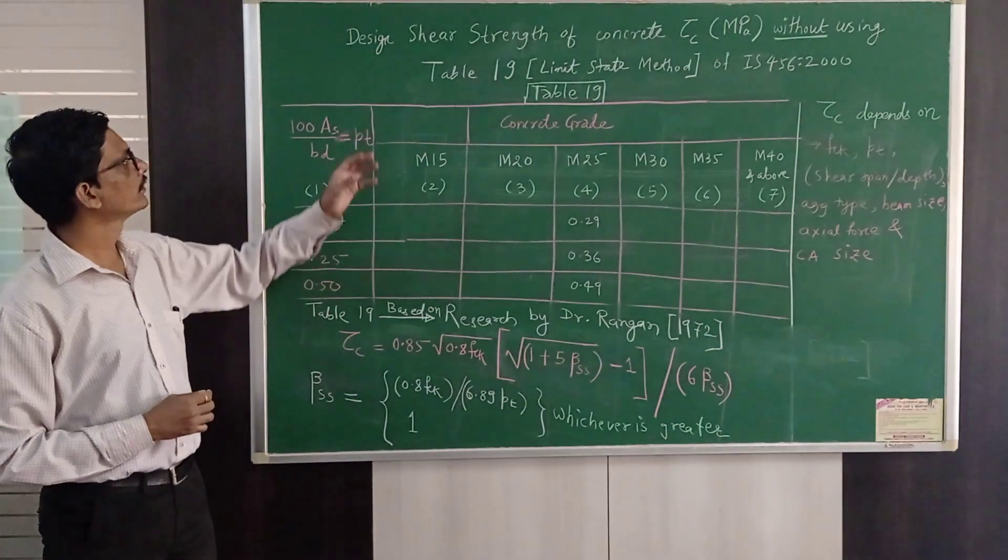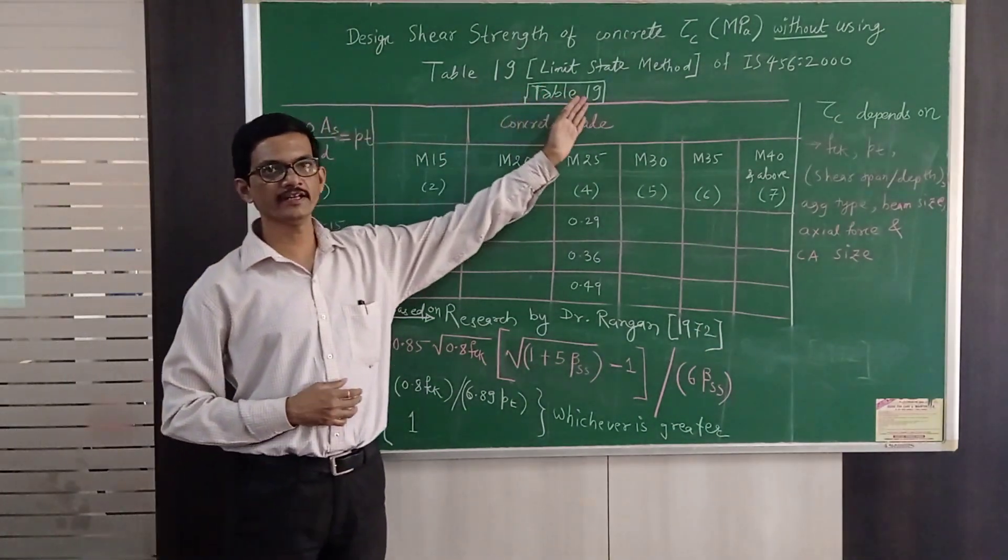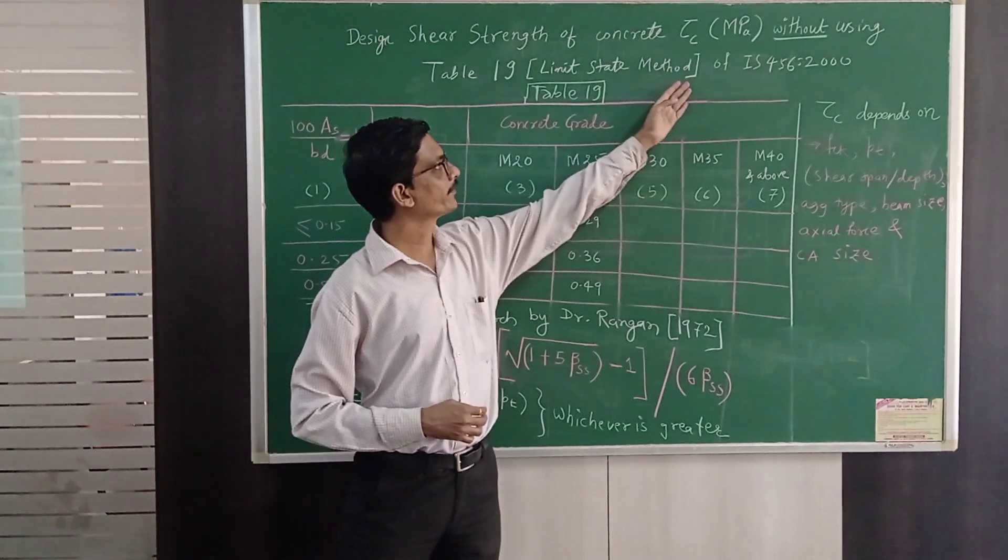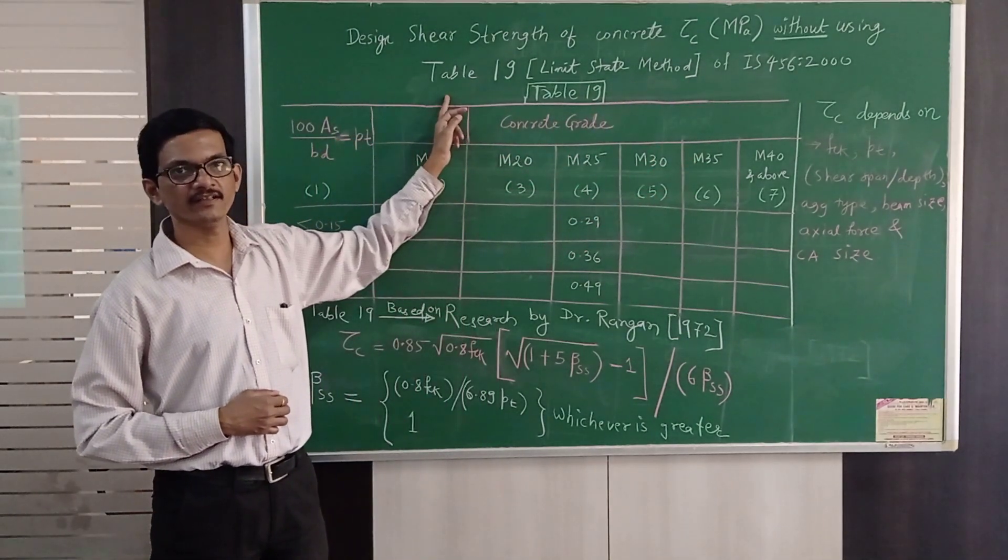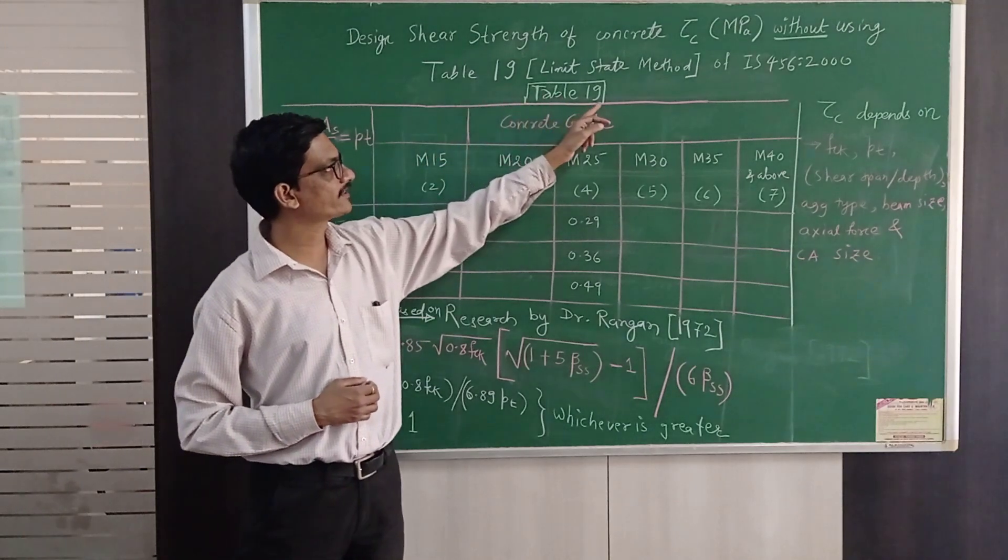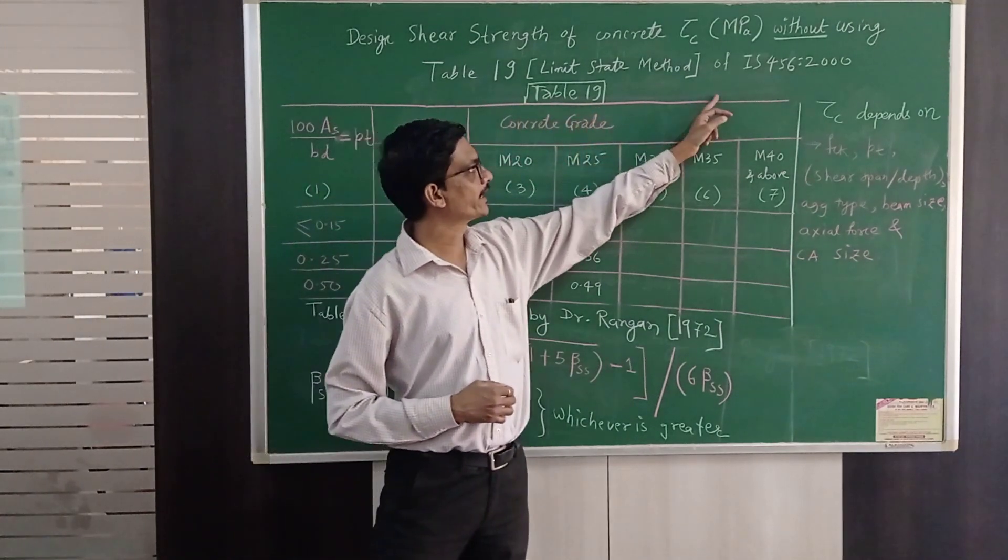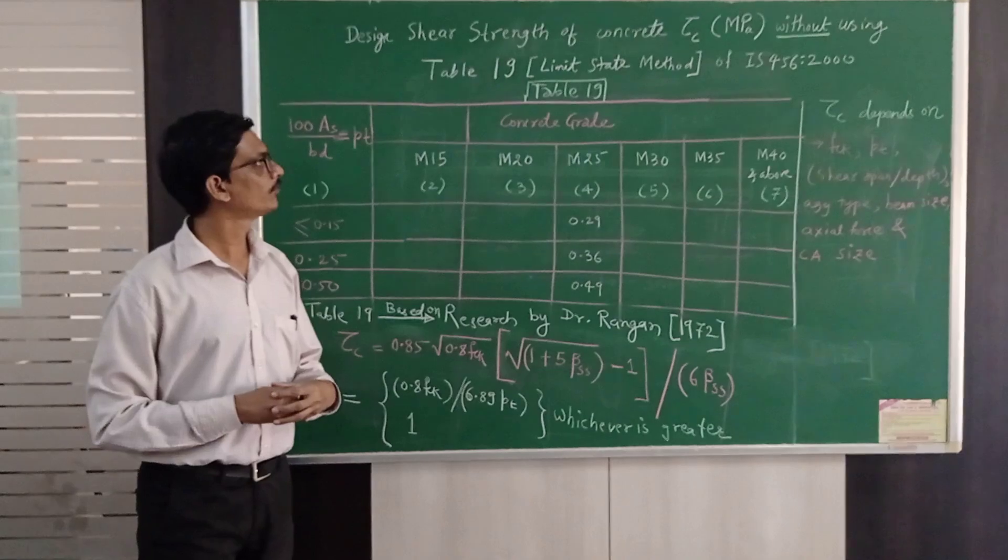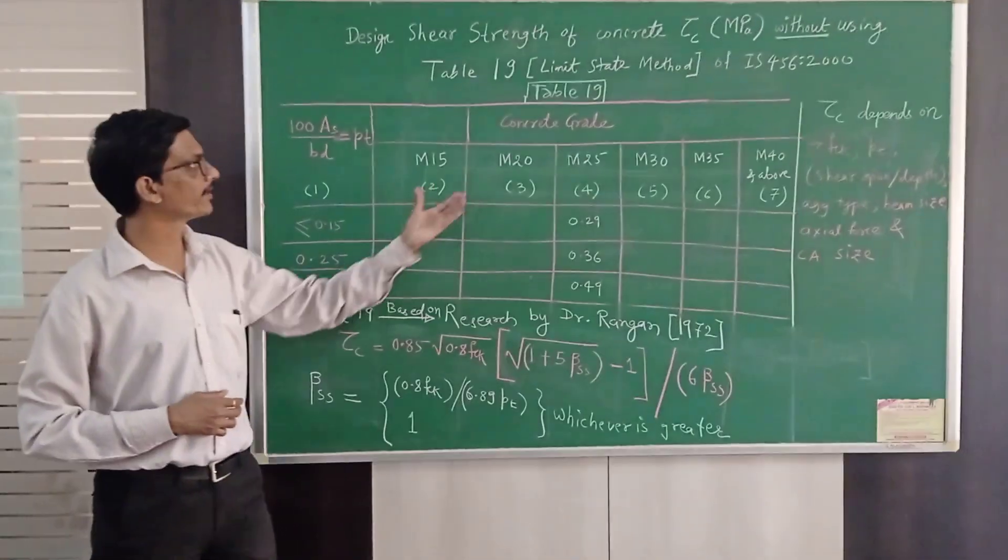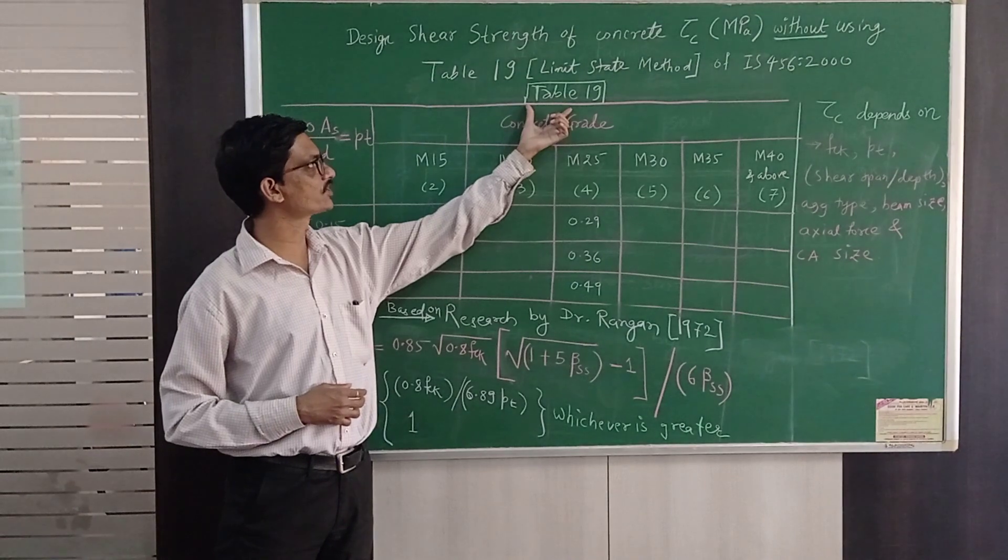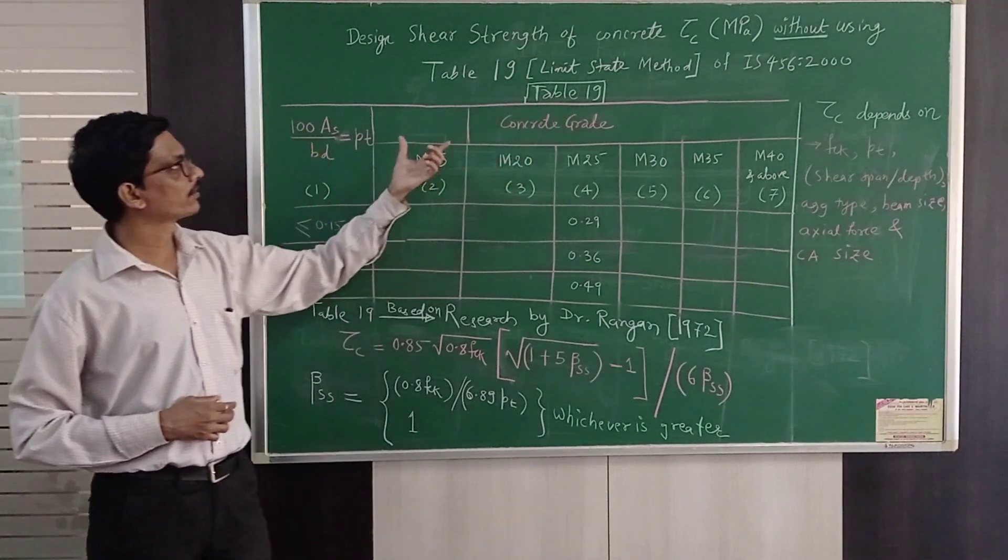I am going to talk about design shear strength of concrete tau c in Newton per mm square without using table number 19 for limit state of RCC design which is given in IS 456-2000. Here I have reproduced part of table number 19 given for limit state method for tau c.